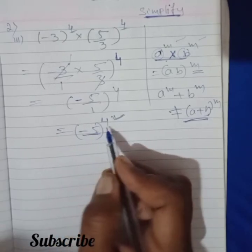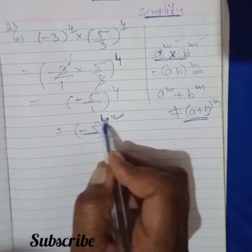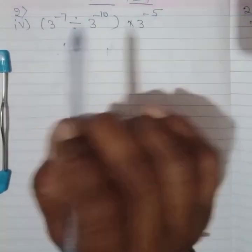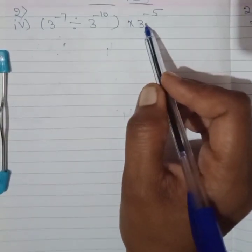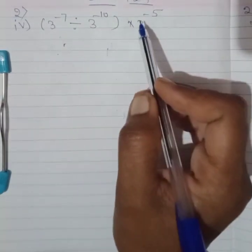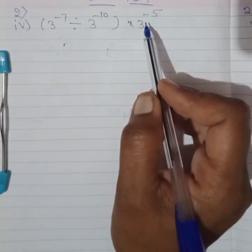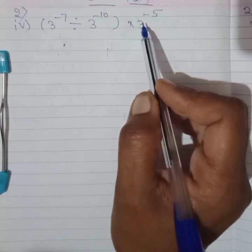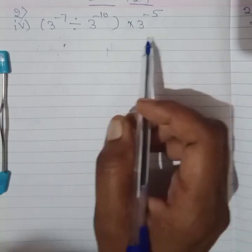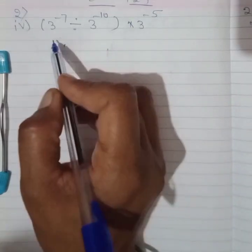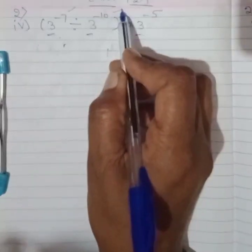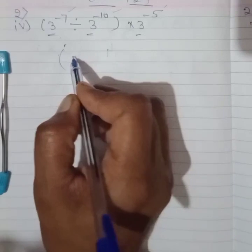Here, in the second question, you are asked to simplify and write the powers as positive, that is, the exponent should be positive. The bases of all the numbers — 1, 2, 3 — are the same, but the powers are different. I will show you how to solve such questions in a simple way, clearing all the basic concepts and where mistakes happen.